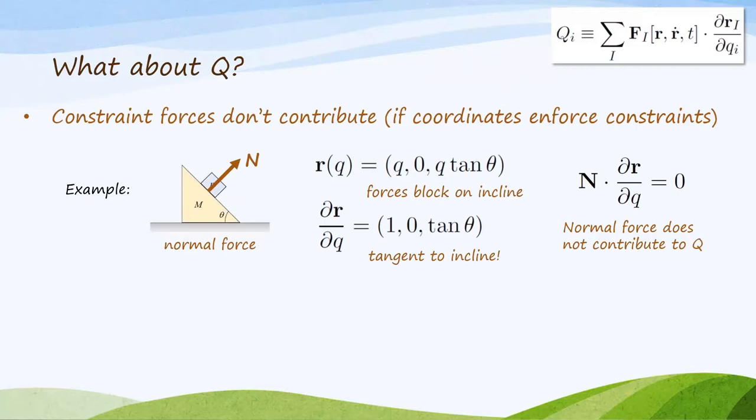Now, when I compute this thing drdq, it's tangent to the incline. You can see that mathematically, or you can just think, what does drdq mean? It means how does r change when we vary q, and by construction, r can only change along the incline, so that vector drdq is along the incline. In particular, it's orthogonal to the normal force, and so when we compute this generalized force q, the dot product is 0, and q equals 0 for that force.